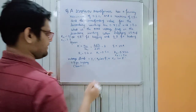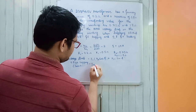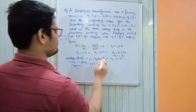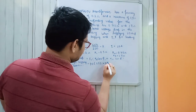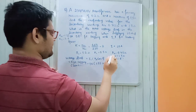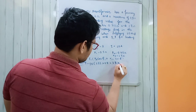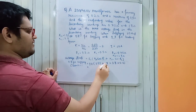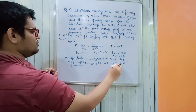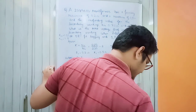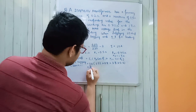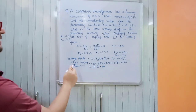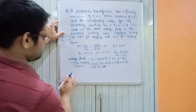For 0.8 power factor lagging, voltage drop = I2 × (R02 × cos φ₂ + X02 × sin φ₂) = 10 × (1.55 × 0.8 + 3.8 × 0.6). Calculating: 10 × (1.24 + 2.28) gives the voltage drop at 0.8 power factor lagging.